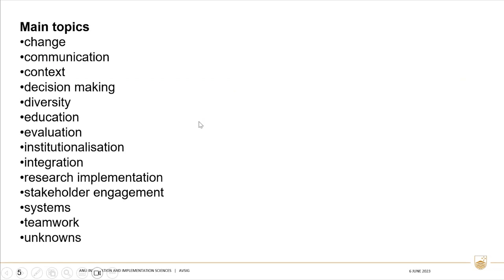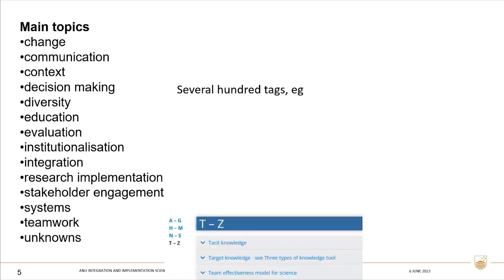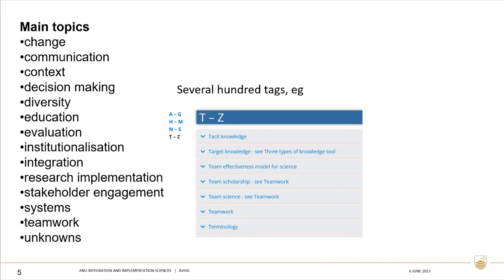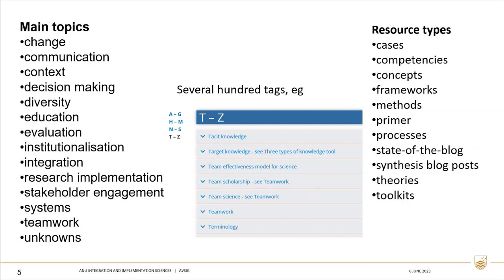To illustrate what those topics are, I'm going to give you this and then go back and talk about what it's all about. There are 14 main topics, which you can read here, so every contribution that people make is categorised on one or more of these main topics. There are several hundred tags, and this gives you just a flavour of what those tags look like. And then there are also the resource types — so is what people are sending in a method, a process, a theory, etc. So that's the vocabulary in brief that we're talking about.